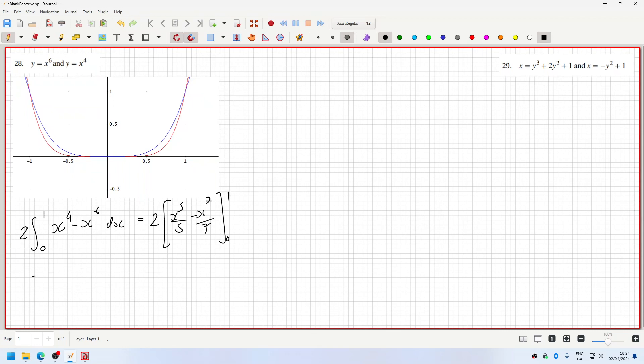From 0 to 1. So it's a fifth minus a seventh times 2, that's 4 over 35.